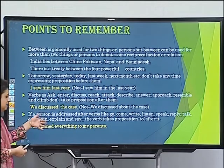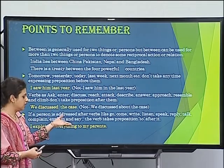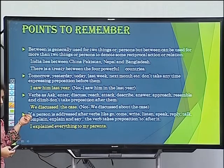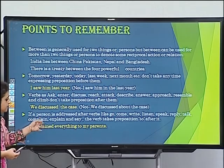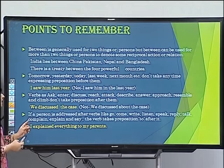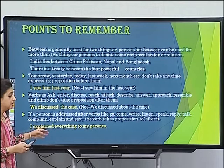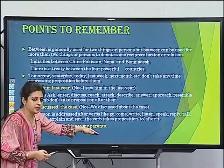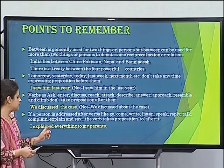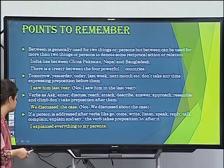If a person is addressed after verbs like go, come, write, listen, speak, reply, talk, complain, explain, say — a preposition is used when a specific person is being addressed. For example, 'I explained to my parents' — here 'to' is mandatory because we are referring to a specific person. If the sentence were simply 'I explained everything,' no preposition would be needed. But as soon as 'my parents' is added, 'to' is required to establish the connection.